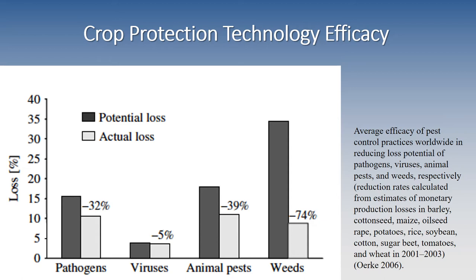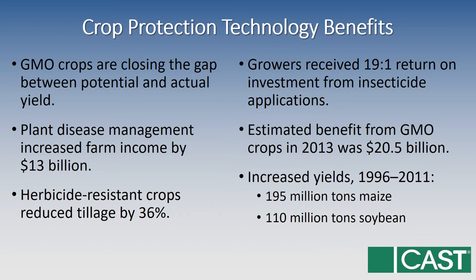Here's another figure that shows potential loss and actual loss. Across the bottom you see the pest categories, and on the y-axis we have the percent of loss. While we would see some sort of loss across the board, weeds would certainly have the most significant impact if we did not have control practices that provide the great efficacy we currently enjoy in our crop protection technology approaches.